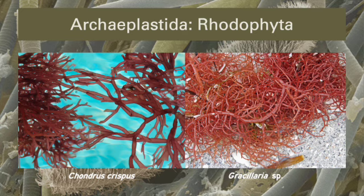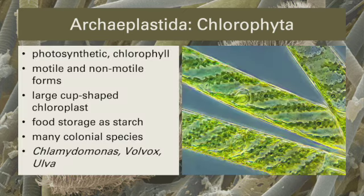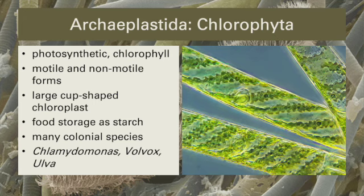Chondrus crispus is the principal source of carrageenan, and several species of Gracilaria and related genera produce agar. Moving on to the green algae, phylum Chlorophyta: like Rhodophyta, all members are photosynthetic, but they possess chlorophylls similar to plants as the primary photopigments. While many are sessile, some are motile. Individual cells often have a single large chloroplast. While Rhodophyta produce an array of interesting storage polysaccharides, Chlorophyta produce starch. There are unicellular, multicellular, and a great number of colonial species, such as Spirogyra.